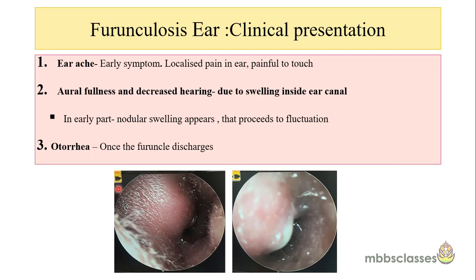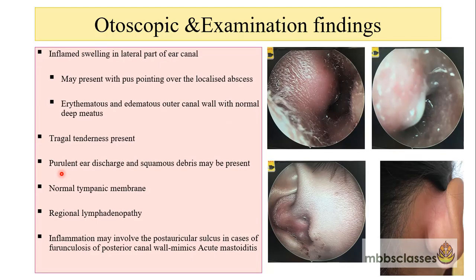In the early part of the disease, there is first the appearance of a nodular swelling, which later proceeds to a stage of fluctuation. Once the furuncle discharges, the patient will present with additional ear discharge. On inspection, there is an inflamed swelling in the lateral part of the ear canal. In some cases, when it progresses to fluctuation, there may be pus pointing or active discharge coming out from the furuncle. The erythema and edema are localized only to the outer ear canal, and the deep meatus is normal.